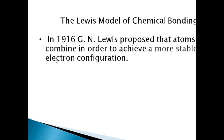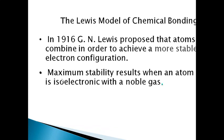In 1916, G.N. Lewis proposed that atoms combine in order to achieve a more stable electronic configuration. If a more stable electron arrangement is achieved in a molecule, bonding is important. To achieve that bonding, Lewis proposed a model where we can see the structural electron placement — how the electrons of individual atoms share electrons to form a bond.